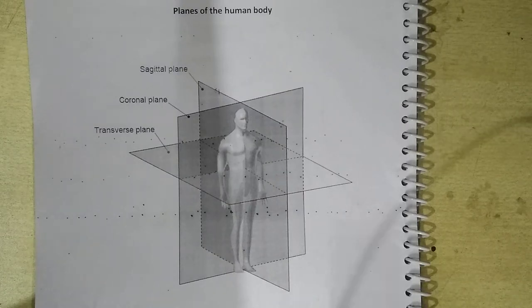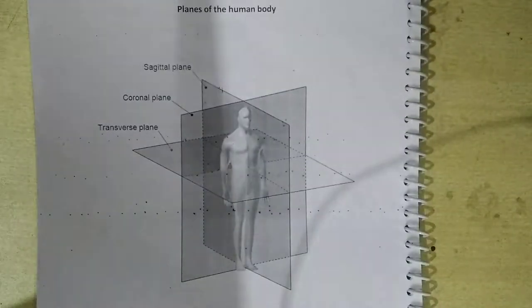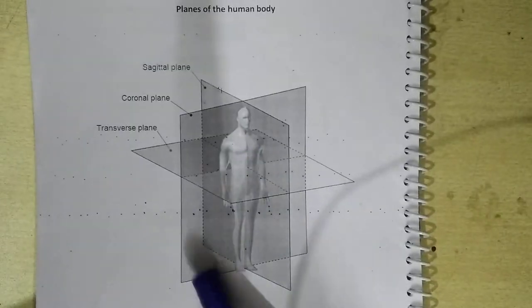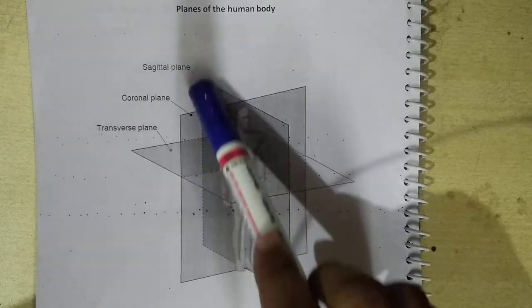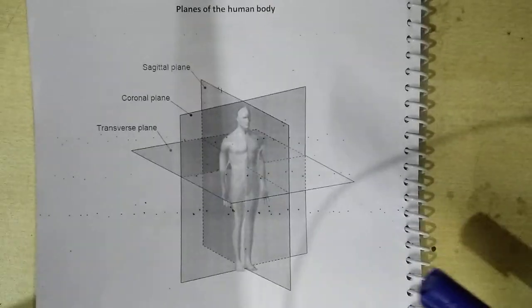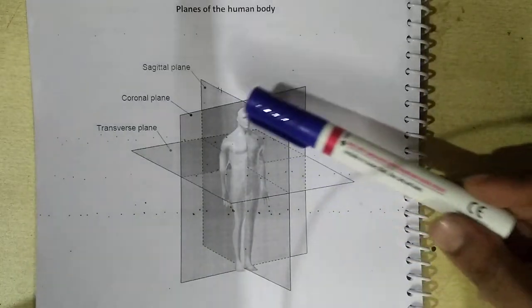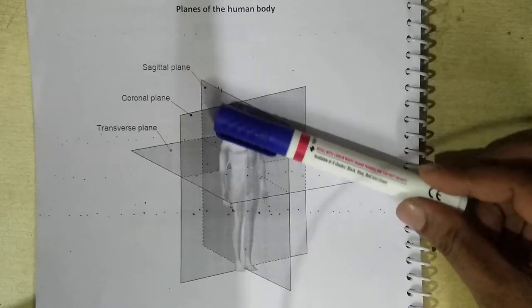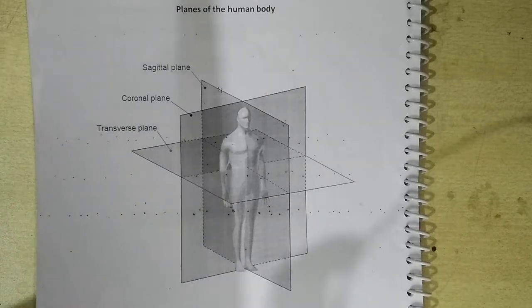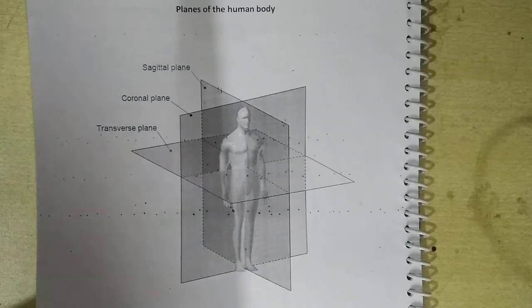So let's come to the first one: sagittal plane. This vertical plane is called the sagittal plane. It's an imaginary vertical plane which passes through the middle of the body and divides the body into two equal halves — the right half and the left half. That is called the sagittal plane.